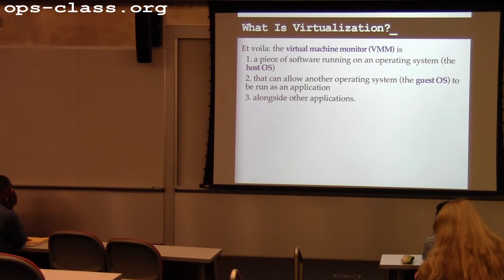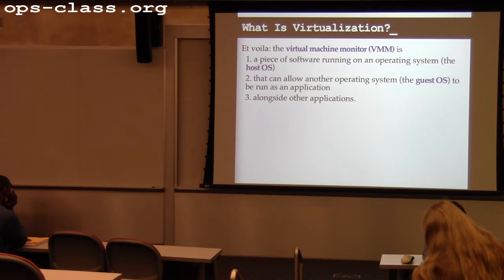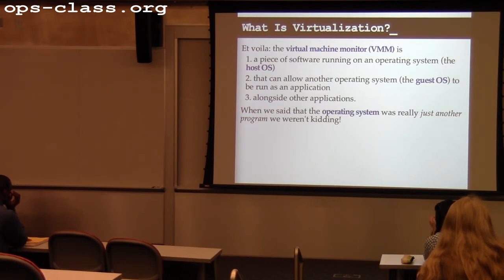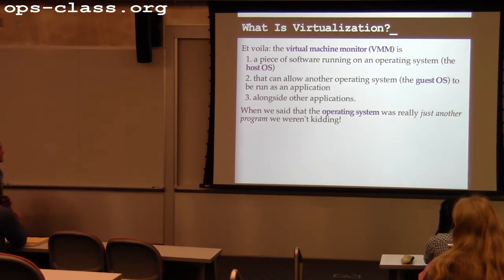The ultimate goal is to allow the guest OS to run as an application. This lecture is more focused on consumer virtualization — the type you've been doing this semester. You have an application called VirtualBox that allows you to run another operating system like Ubuntu inside your machine. This is funny: we said at one point the operating system was just another program. This is the fullest extension of that — the OS is a program, and if you're careful about managing its privileges, you can run it alongside other instances.